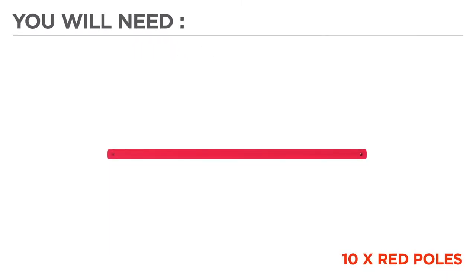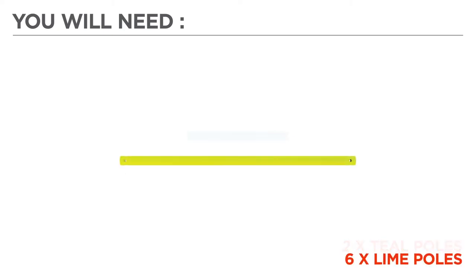Now before we begin, let's gather the color-coded parts needed for your build. 10 red poles, 12 navy poles, 2 teal poles, 6 lime poles,